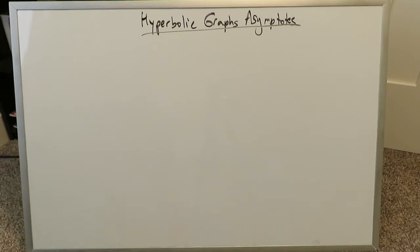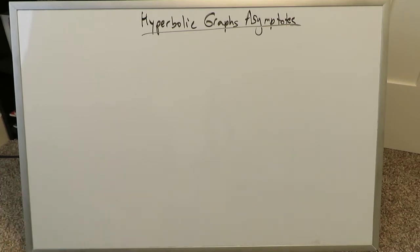Good evening everyone, I am Mr. Ish. Thank you for joining me for this video. We're looking a step or two back in addressing this topic on hyperbolic graphs, especially with regards to their asymptotes, because these types of graphs are frequently not mentioned quite often and therefore end up being ignored. We've looked at these types of graphs previously, but we've never looked at them in terms of asymptotes.